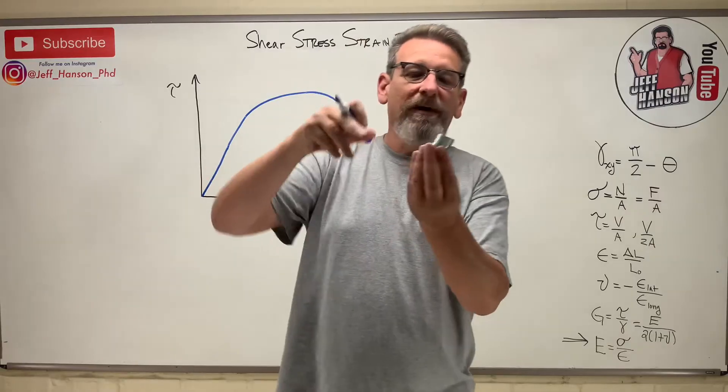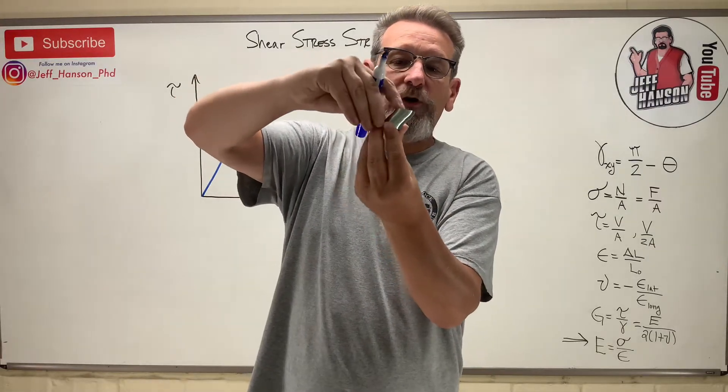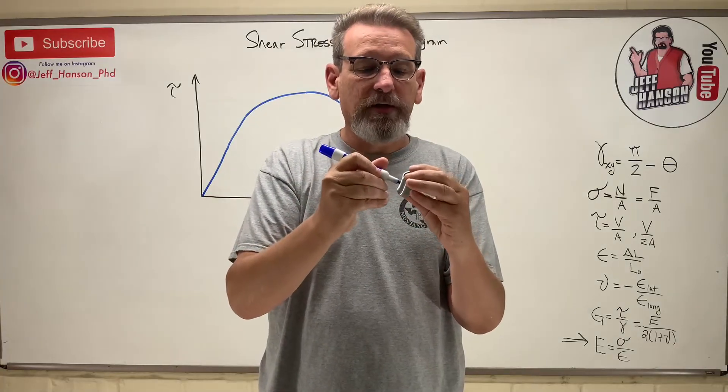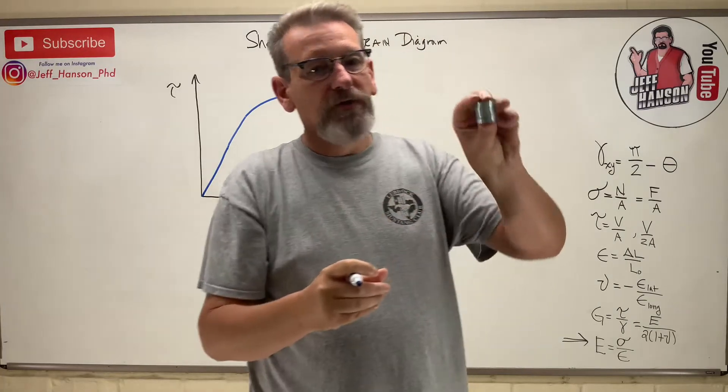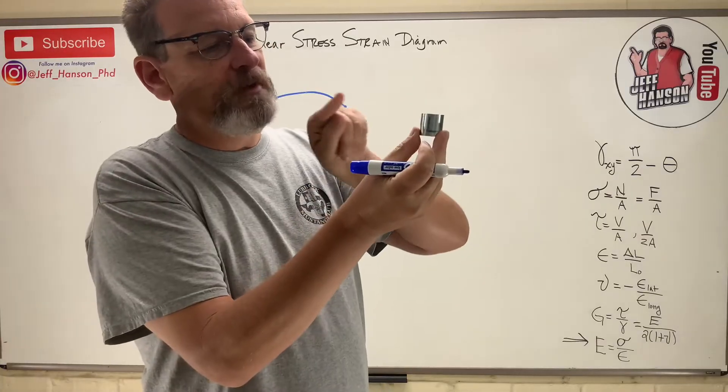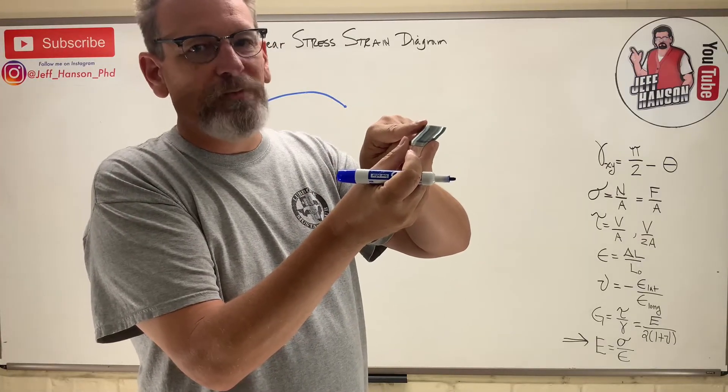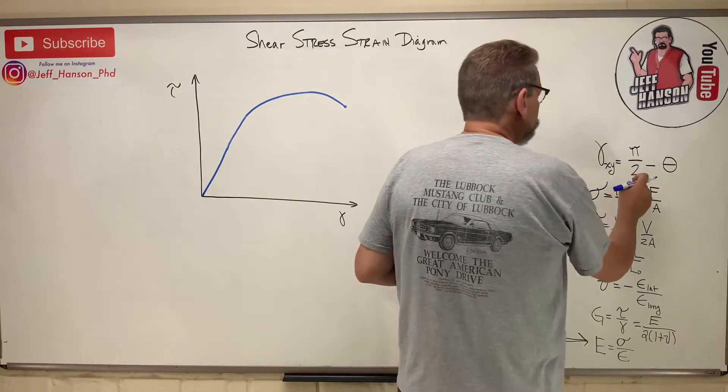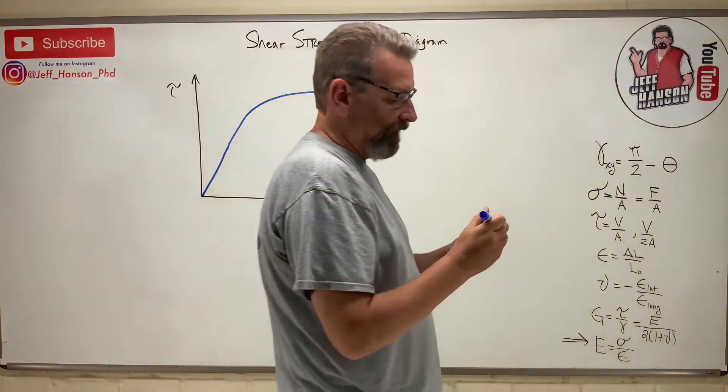Remember we talked last time about my little slinky, that when it's deformed like so, right, that 90 degree angle which used to be like that. There's a 90 degree angle, and then once I push on it, it gets deformed to something less than 90 degrees.